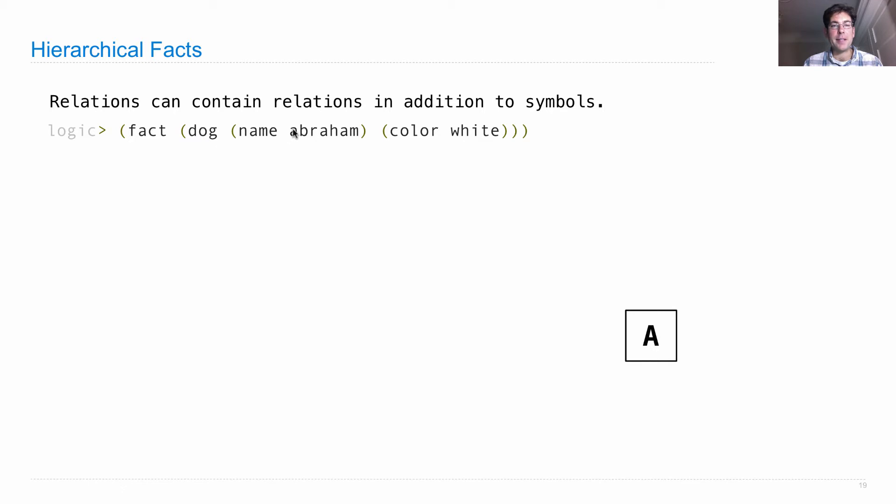I've really just said there's three things in a relation together. But instead of just using symbol Abraham and symbol white, I've nested within them relations. And these are relations that have only two elements instead of three.